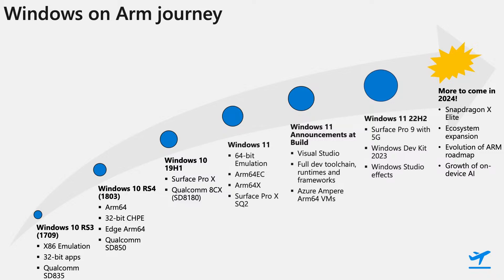ARM64 EC allows developers to incrementally transition existing x64 apps to take advantage of native speed and performance. The next milestone was last year's Microsoft Build event, when many developer tools became ARM native. The Visual Studio team announced native Visual Studio along with the availability of the full developer toolchain and frameworks. Native Visual Studio, along with the Windows Dev Kit 2023 — a compact device purpose-built for developers — enables developers to build, debug, and test applications natively on ARM devices. Azure also added the ability to create ARM64 VMs using the Ampere Ultra offering, providing a scale option for running QA and CI/CD infrastructure in the cloud.